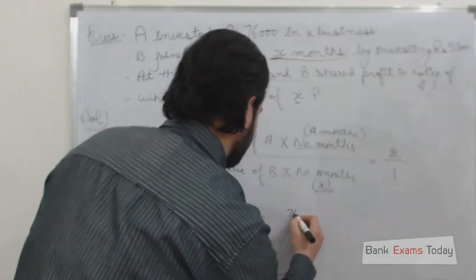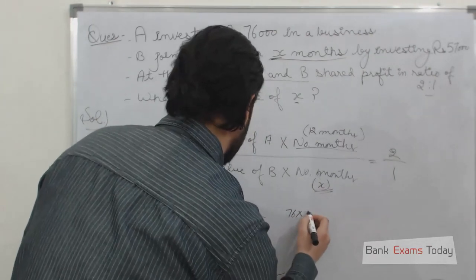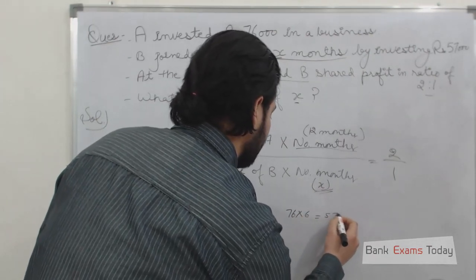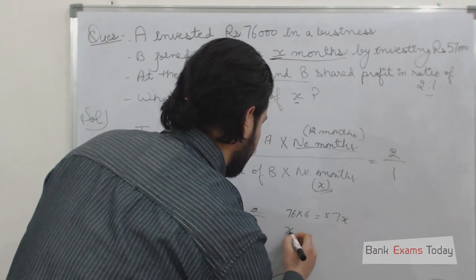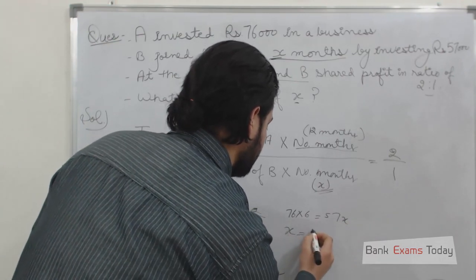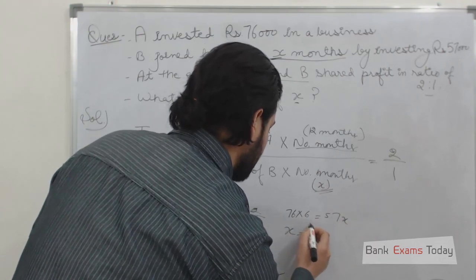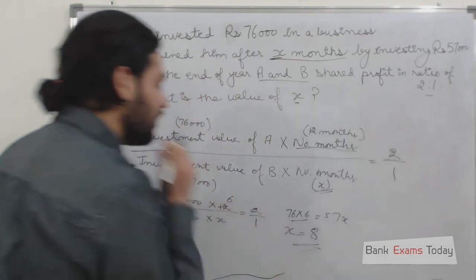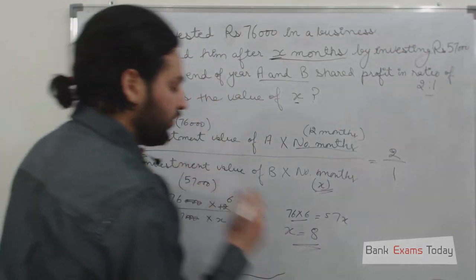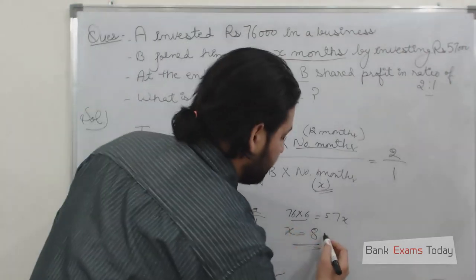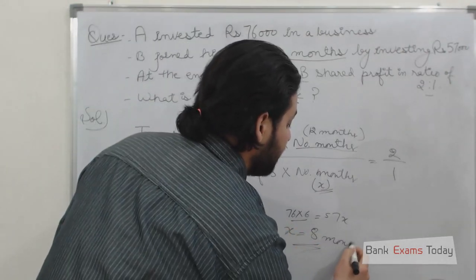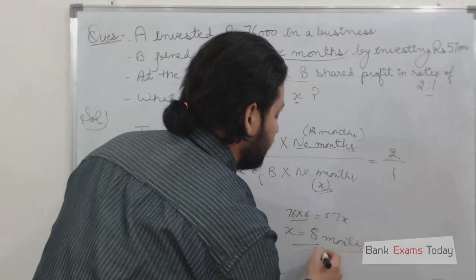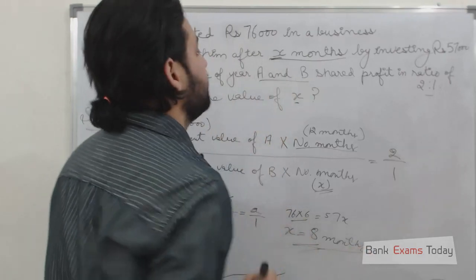So we will simplify: 76 by 6 is equal to 57X. X is equal to 8. So the answer is 8 months — after 8 months, B joined A in his business.